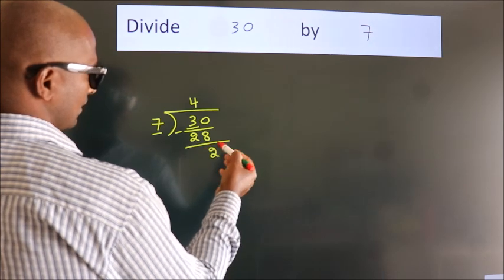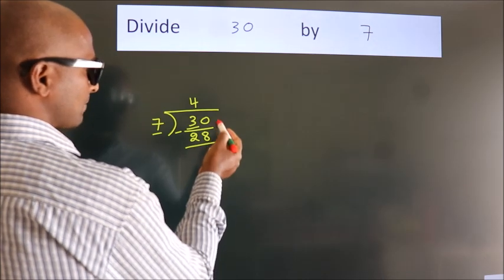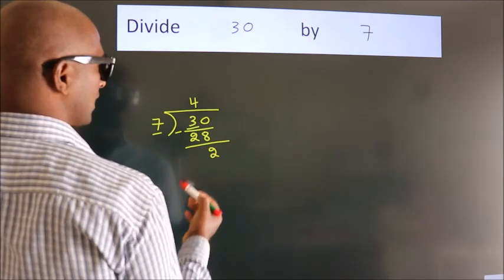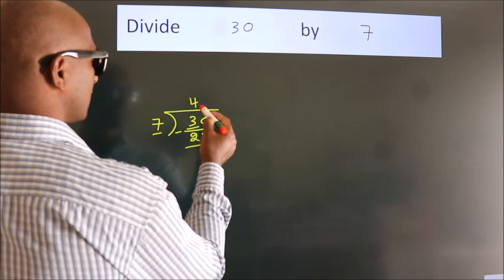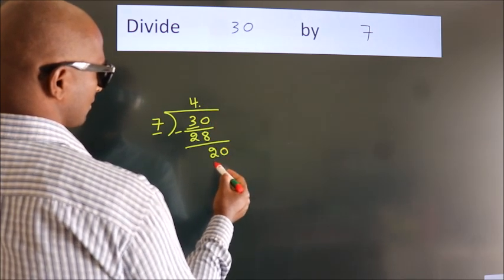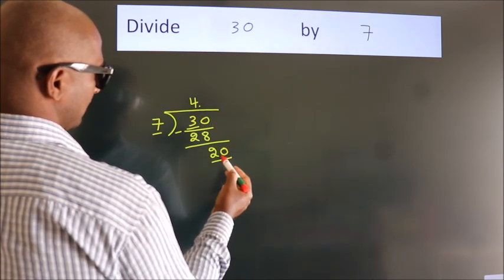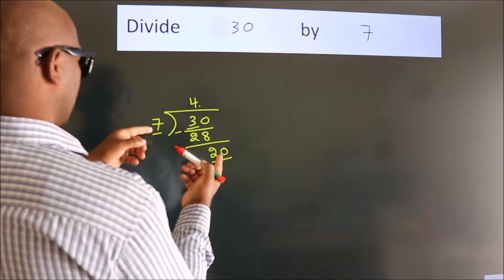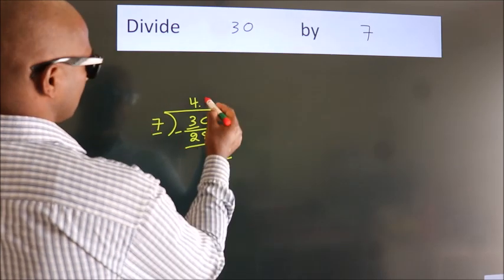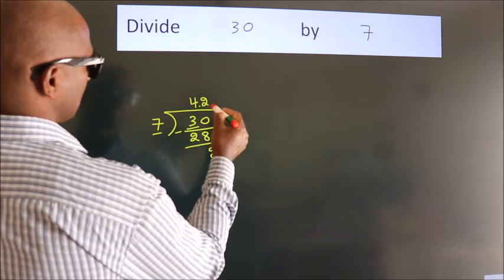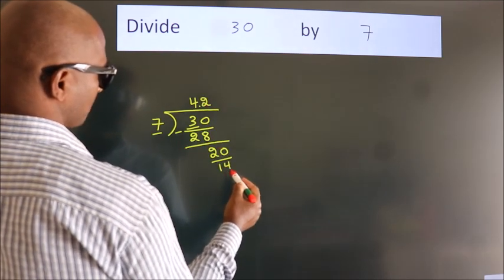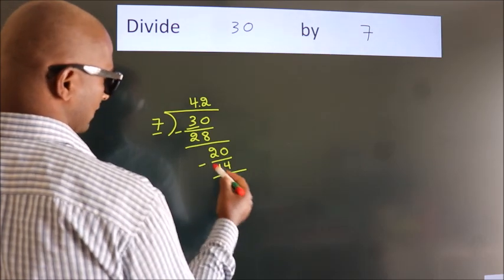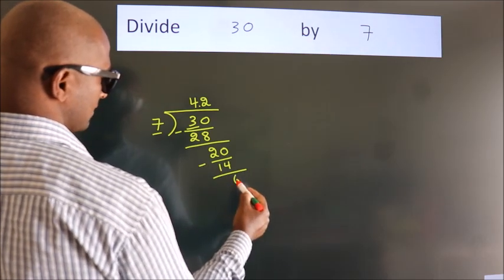After this, no more numbers to bring down. So what we do is we put a dot and take 0, so 20. A number close to 20 in the 7 times table is 7 twos 14. Now we subtract and we get 6.